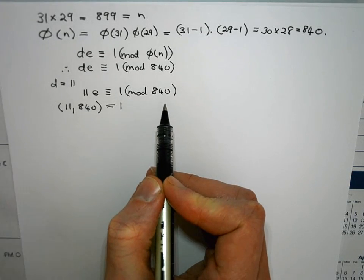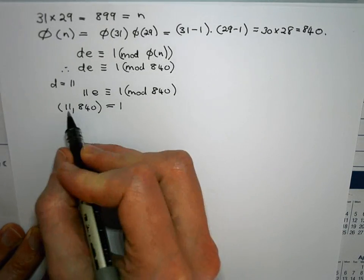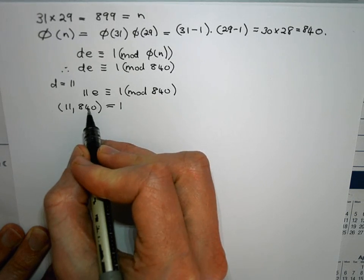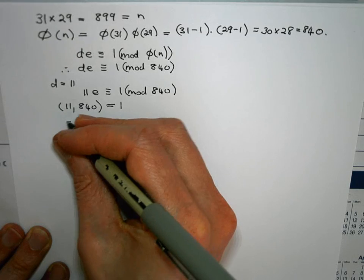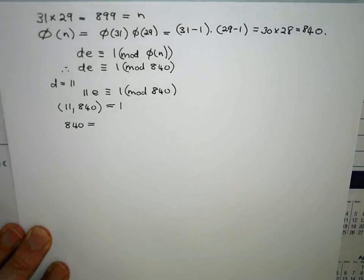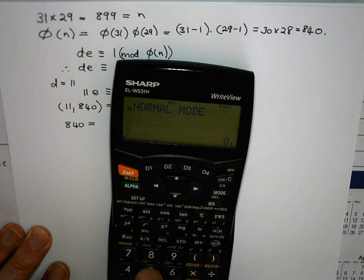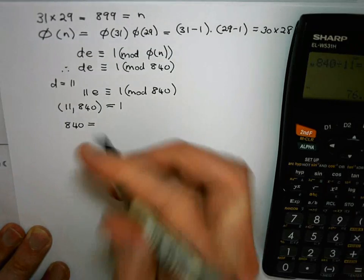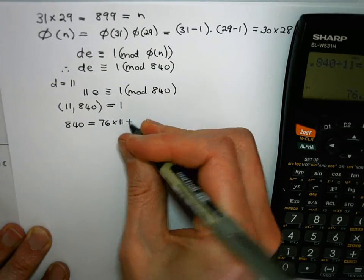Now to go and find that solution I need to go and express this GCD as a linear combination of 11 and 840. So I need to run Euclid's algorithm. So I say well we start with 840 and I want to divide that by 11. So 840 divided by 11 gives me that. It goes in 76 times.